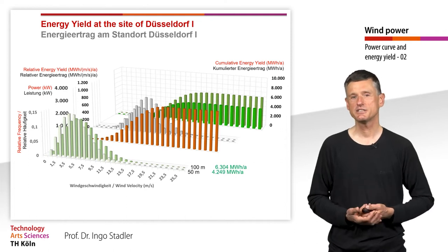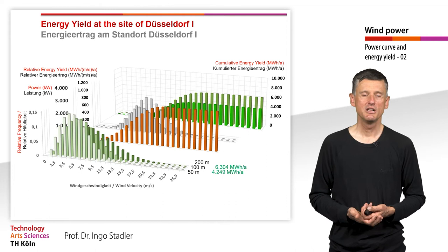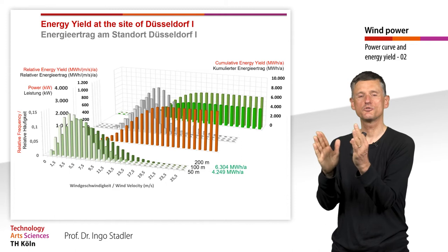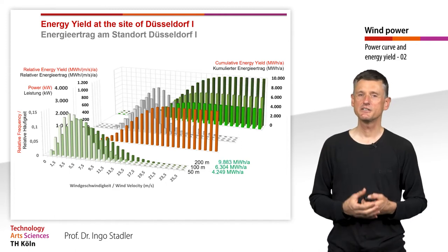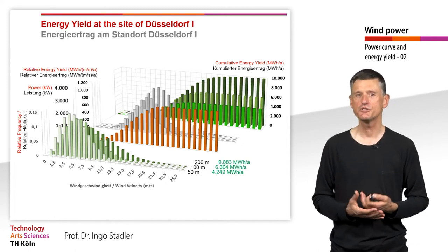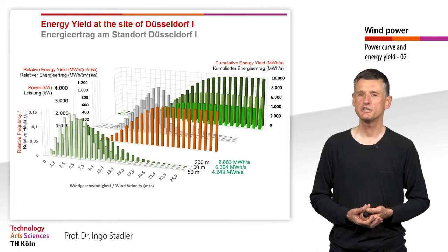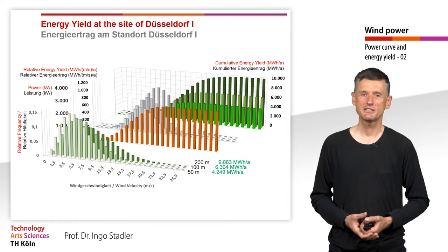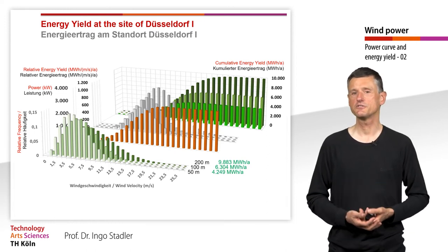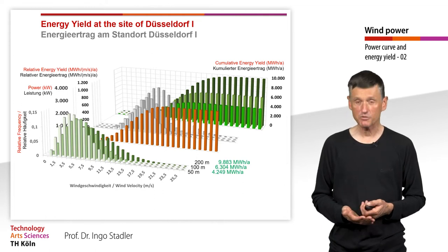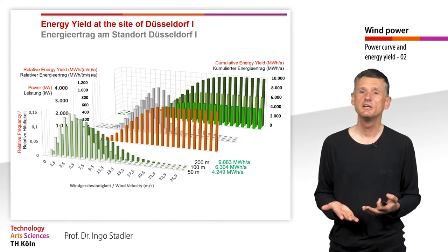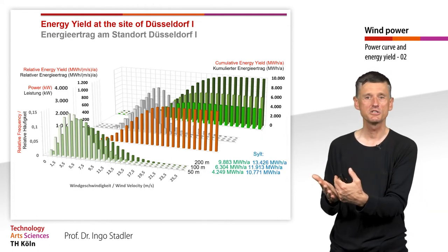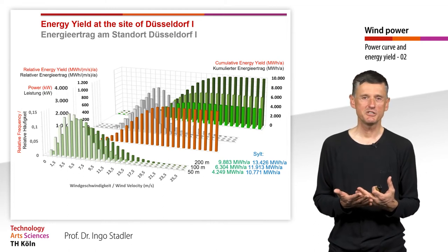Going to 200 meters, the dark green curve is significantly shifted to the right toward higher wind speed levels, resulting in a significantly different shape of the relative energy yield and a yearly energy yield of more than 9,000 MWh per year. Comparing Düsseldorf to Sylt, we see a very different behavior between the two sites.